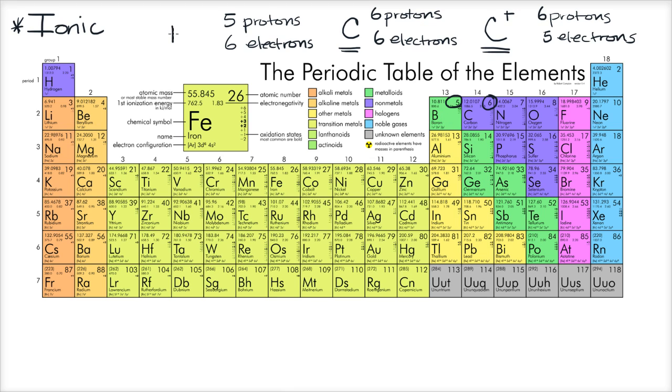So this is going to be boron. Neutral boron would have five protons and five electrons. But this one has one extra electron. So it has one extra negative charge. So you could write it like this, one minus. Or you could just say it has a negative charge.